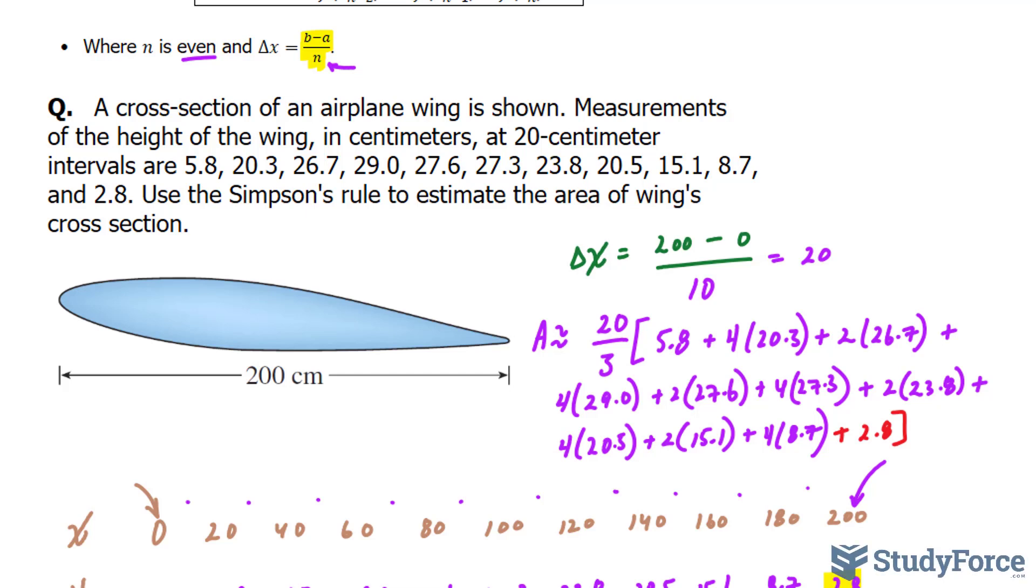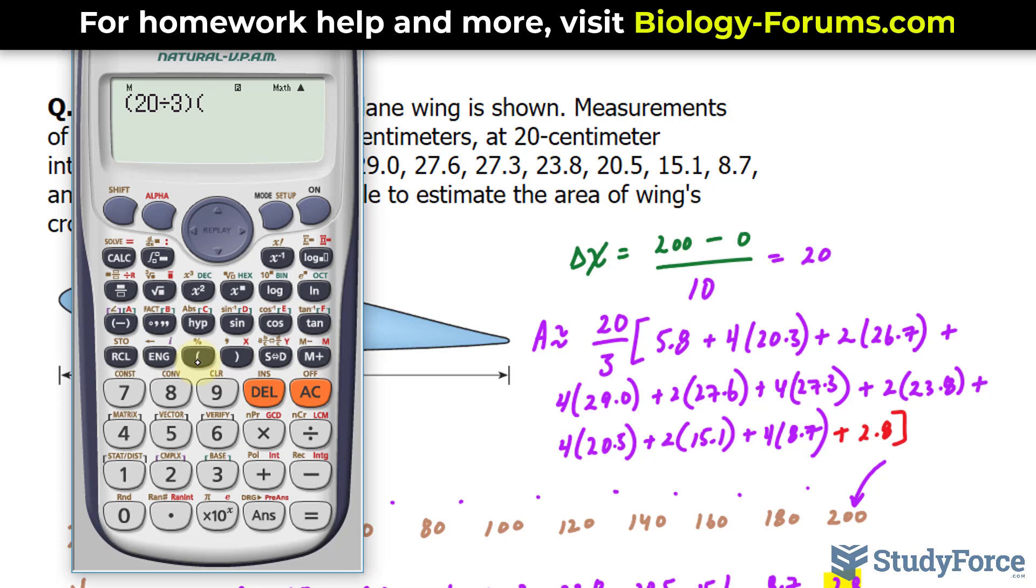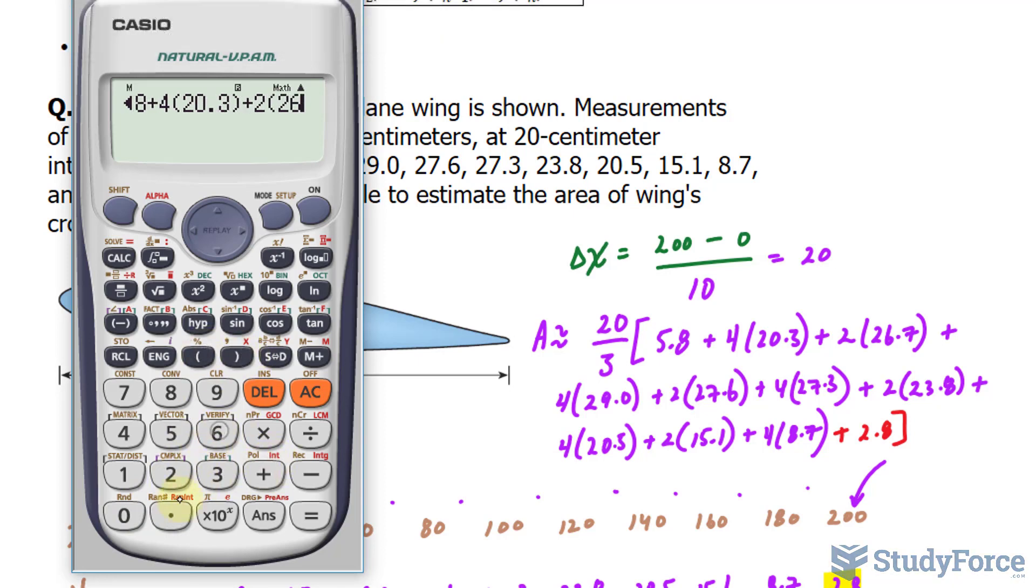Now we have to use our calculator to compute this. And depending on your calculator, you might have to do this in two steps. I'll show you how to do it all in one step because my calculator is capable of that. So 20 divided by 3, that factor, multiplied to all of these: 5.8 plus 4 times 20.3 plus 2 times 26.7. And you keep inputting all of this where you should end up with the final answer.